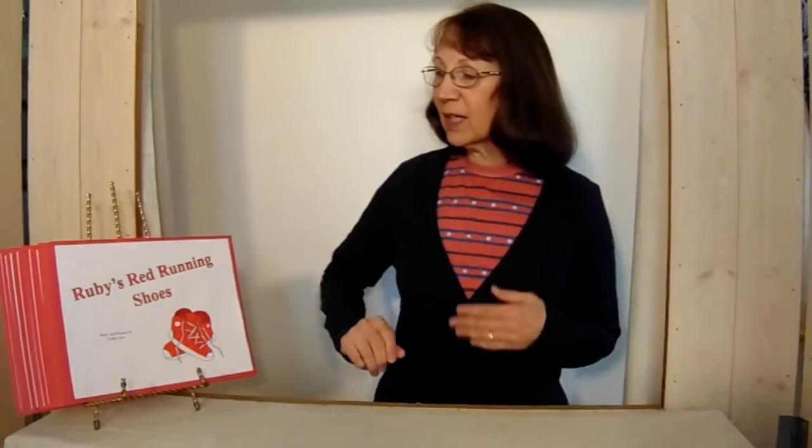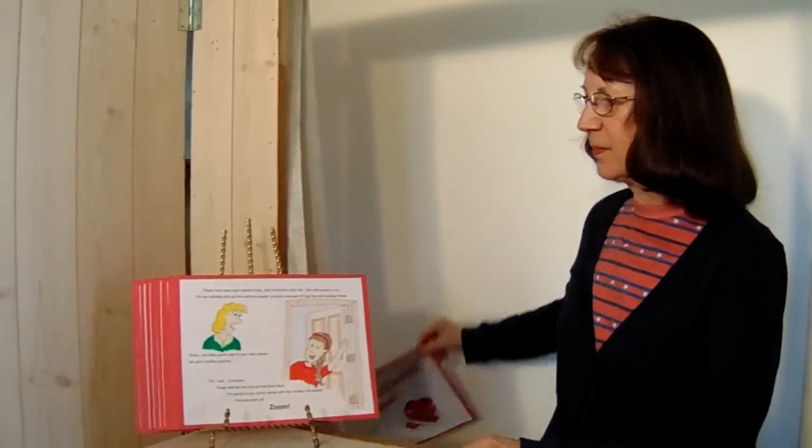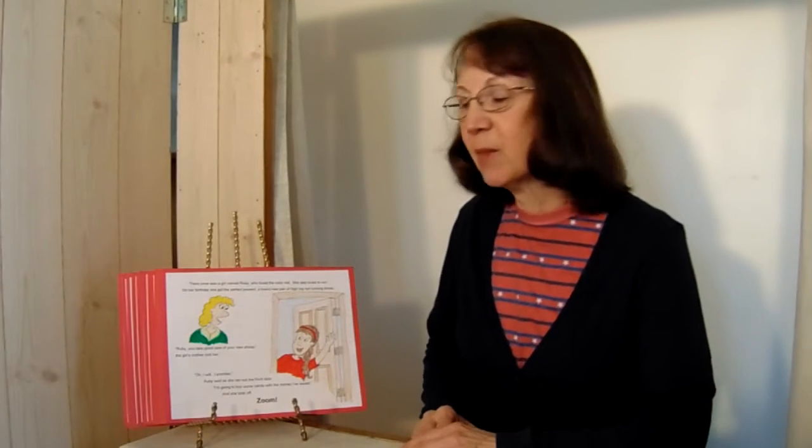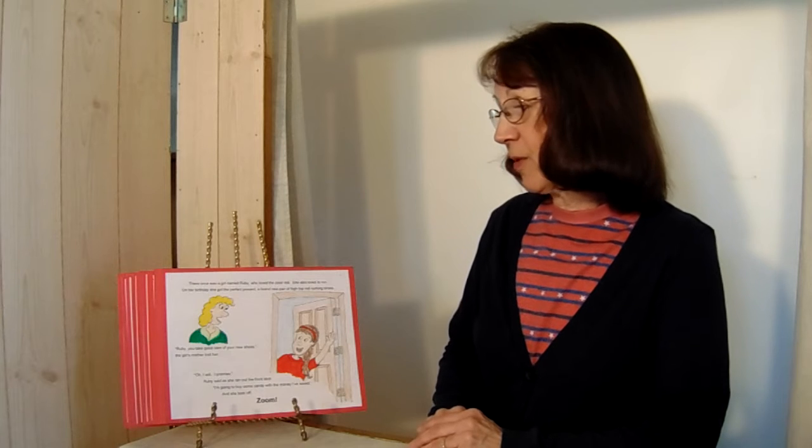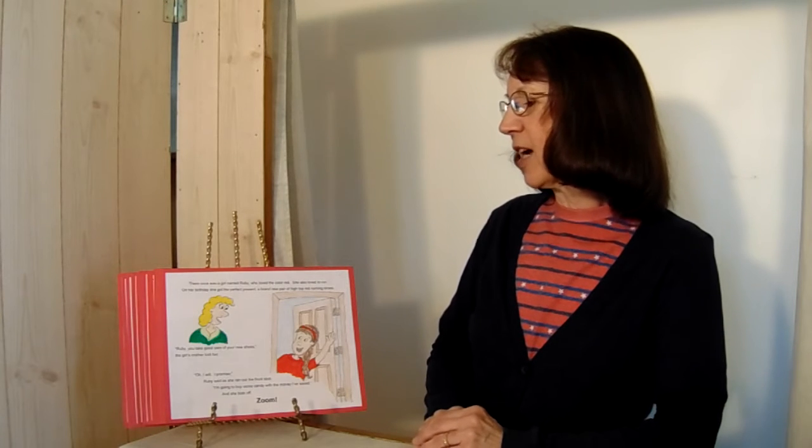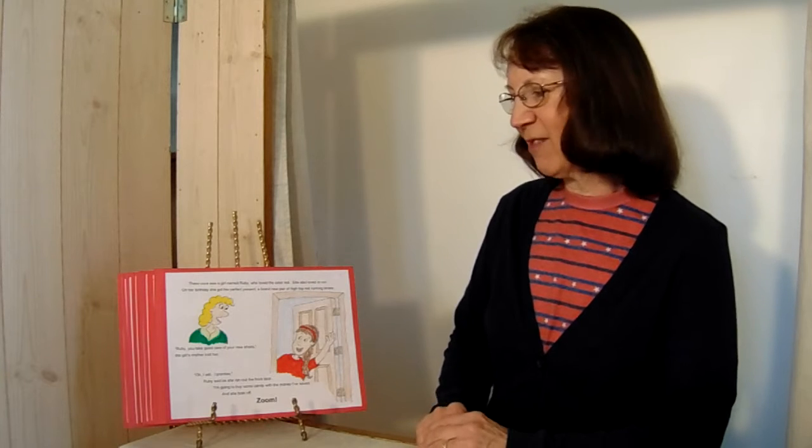The title of the story is Ruby's Red Running Shoes. Stories and picture by Campy Ann. There once was a girl named Ruby who loved the color red. She also loved to run. On her birthday she got the perfect present: a brand new pair of high top red running shoes.